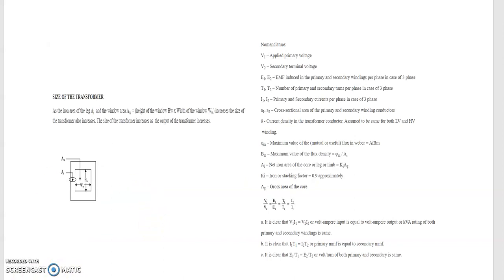Before designing the transformer, you should have an idea about the iron core area and the window area. Let's first divide the complete transformer specifications into a few points. This particular portion of the core is called AI, that is the iron area, and this particular area is the window area — that is, the height of the window and width of the window. AW increases the size of the transformer, and as the size of the transformer increases, the overall output also increases. Before proceeding with further derivations, we must know these short forms.